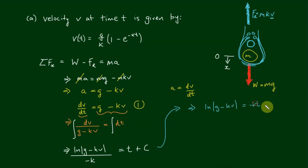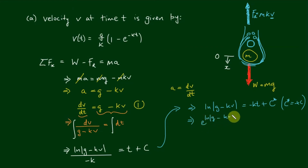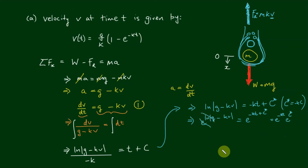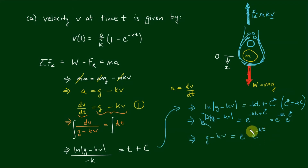This gives us log(g minus kv) equals negative kt plus c-star, where c-star equals negative kc. The next step is to exponentiate both sides: e to the log(g minus kv) equals e to the (negative kt plus c-star), which we can separate as e to the c-star times e to the negative kt. On the left-hand side, e and log cancel, leaving g minus kv equals e to the c-star times e to the negative kt. We'll write e to the c-star as another constant A.